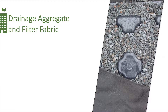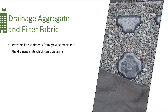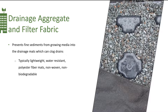In this photo, a rigid drainage board is used to support drainage aggregate, which are the little gray particles, with the filter fabric to separate the growing media from this drainage aggregate. The filter fabric prevents fine sediments from the growing media from clogging the drainage mat and drains. This fabric is typically lightweight, water resistant, polyester fiber mats, non-woven, and non-biodegradable. It's an inexpensive component and is often attached to the drainage product.